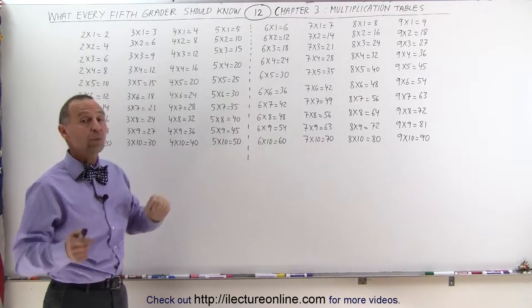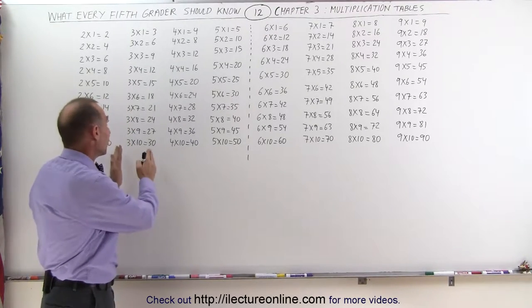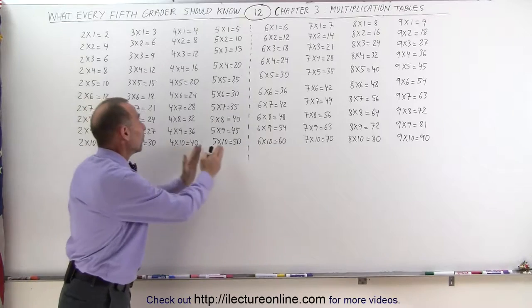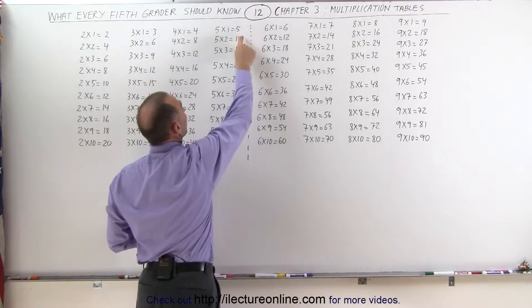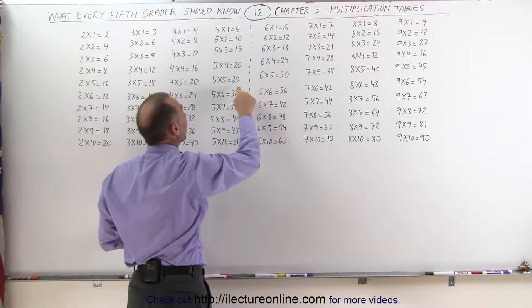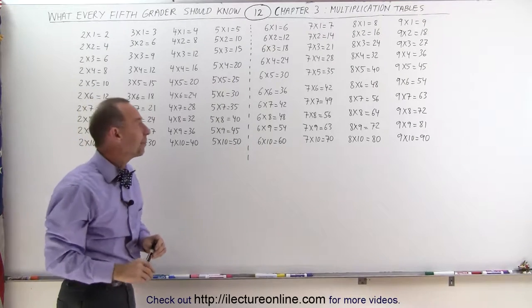Multiplying times 5 is also really easy. Notice I did skip multiplying times 4, but when I jump from multiplying with 3 to multiplying by 5, notice that each answer either ends in a 5 or a 0: 5, 10, 15, 20, 25, 30, 35, 40, 45, 50, and those are also easy to remember.